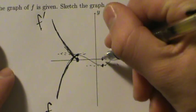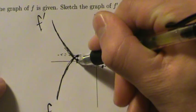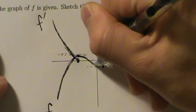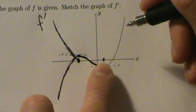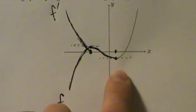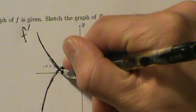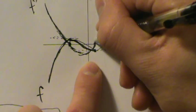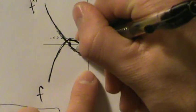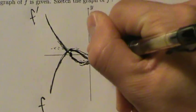Here, f has a horizontal tangent line, so f prime must be zero — that's why we know f prime goes through this point. Now f starts decreasing until it gets another horizontal tangent line. So in this entire interval from this x value to this x value, the derivative is negative because the function is decreasing. We know we have to turn back around at some point because the derivative has to equal zero again at the next horizontal tangent line.